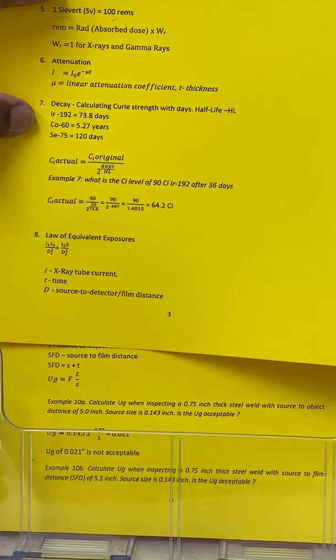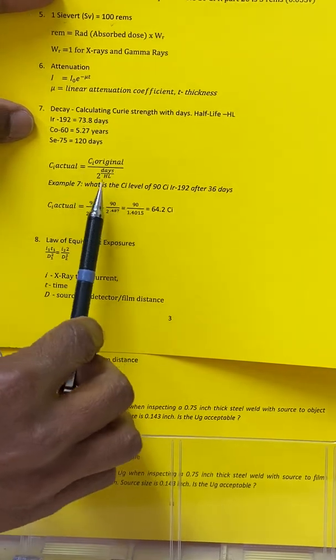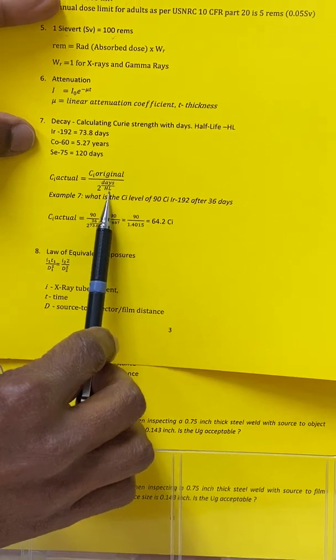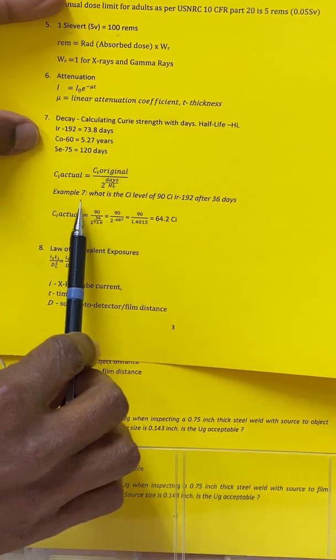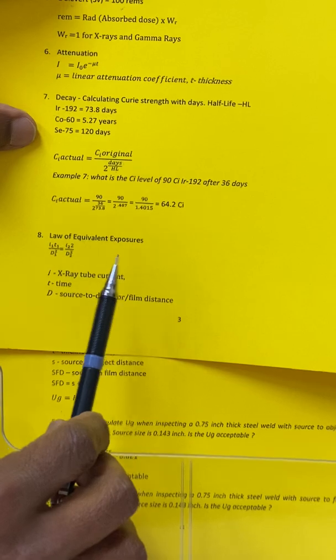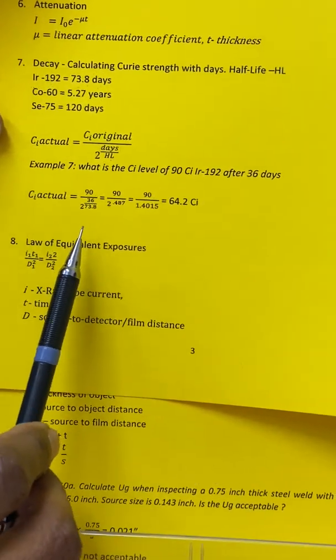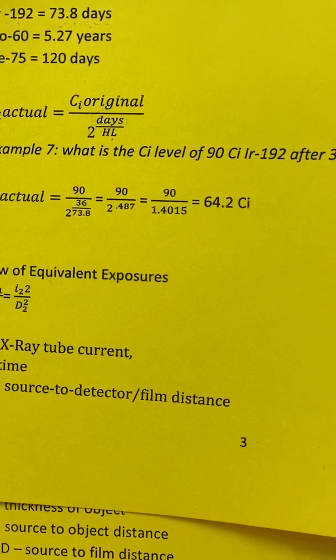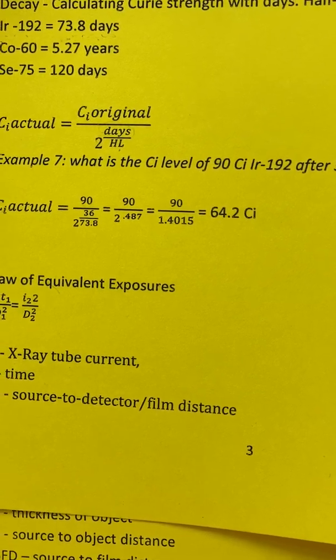Here is the formula to calculate the curie strength after any number of days. It's C_i original, then 2 to the power of negative number of days divided by half-life. You can use this to calculate. Here is an example—it's in small font, so I will let the camera focus on it. This is calculated after 36 days, and after 36 days the 90 curies becomes 64.2 curies.